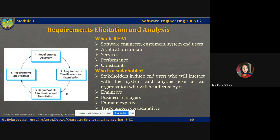The third activity — requirements prioritization and negotiation — is concerned with prioritizing requirements and finding and resolving requirements conflicts through negotiation between different stakeholders. Usually stakeholders have to meet to resolve differences and agree upon compromise requirements. The last step, requirements specification, is where the requirements are documented and input to the next round of the spiral. This is where you document the final requirements after arriving at a consensus, and this serves as input to the next spiral. Formal or informal requirements documents will be produced here.